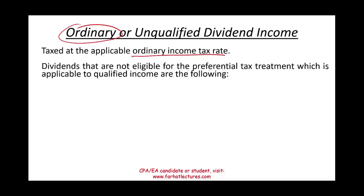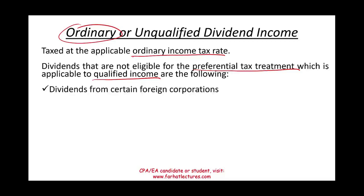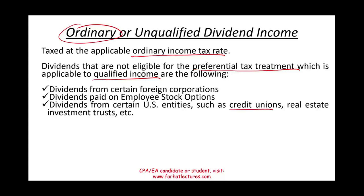Dividends not eligible for preferential (qualified) treatment include: dividends from certain foreign corporations; dividends paid on employee stock options; and dividends from certain U.S. entities such as credit unions and real estate investment trusts (REITs), which have special rules and cannot give you what's considered a qualified dividend.